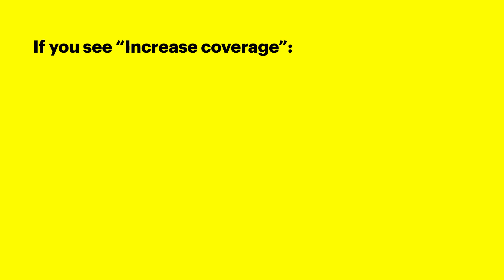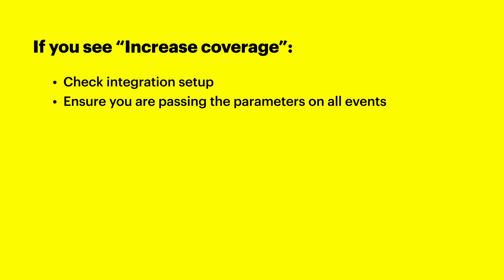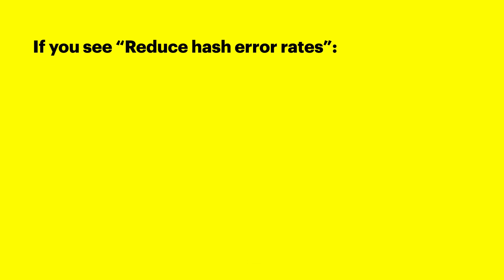If you see increased coverage for an identifier, this means that this identifier is missing on more than 20% of your events. If this is not expected, please check your integration setup to ensure that identifiers are being passed on each event. Otherwise, ensure that you're passing the parameter on all events. If you see reduce hash error rates for an identifier, this means that we are seeing a high level of errors due to hashing issues, such as hashing a null value. If you are using the conversions API, we recommend you install our business SDK and use our test events tool to ensure that you are hashing or passing the data correctly. Otherwise check your pixel or MMP setup to verify if values are being hashed correctly.